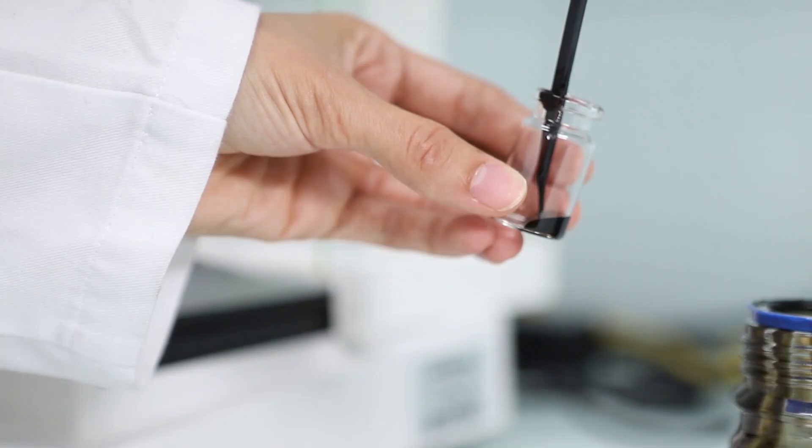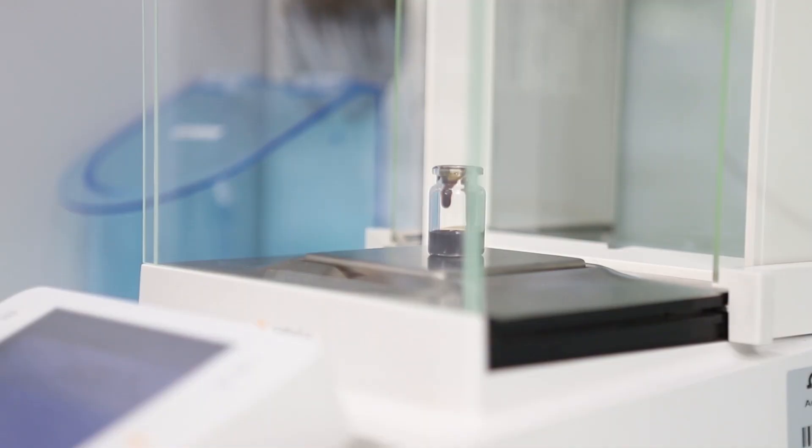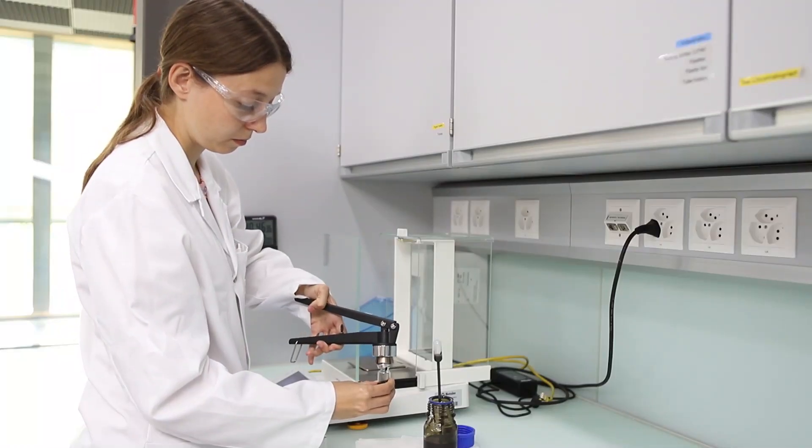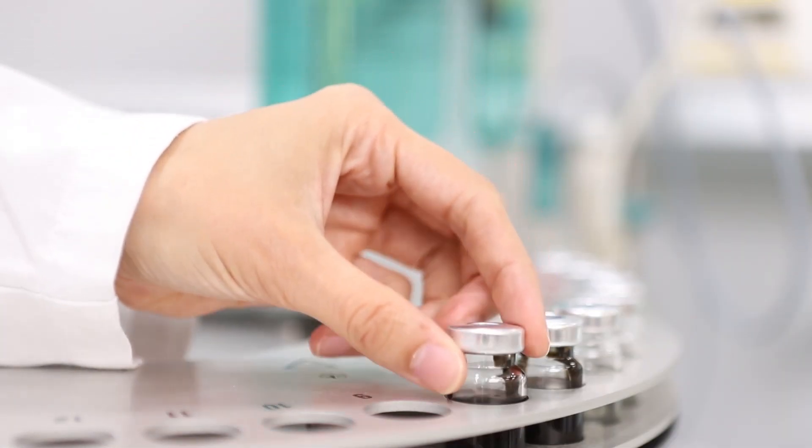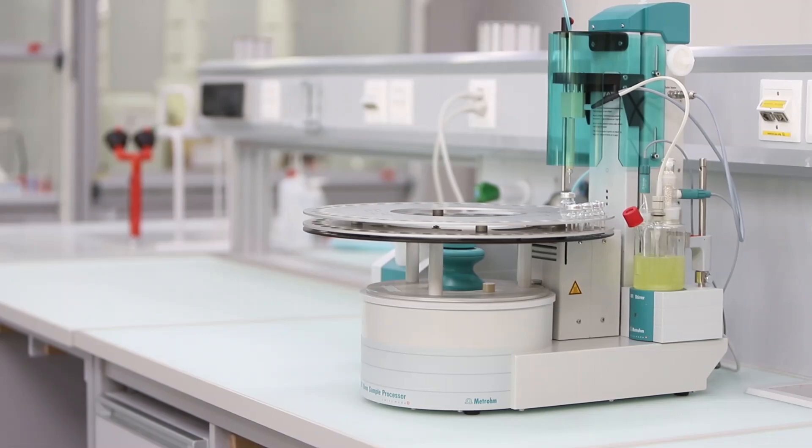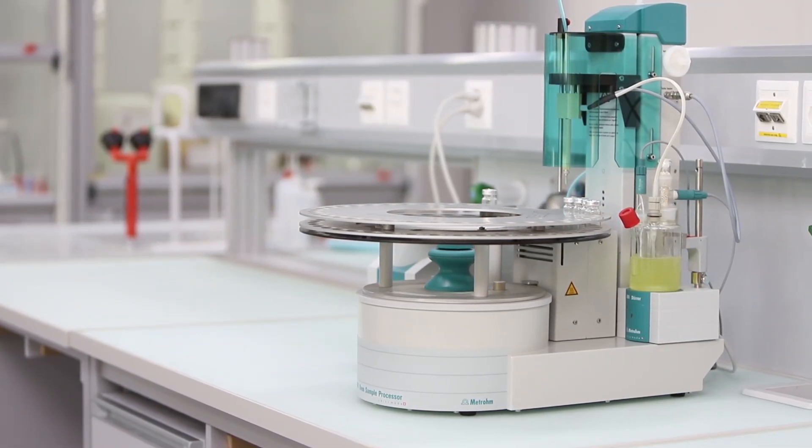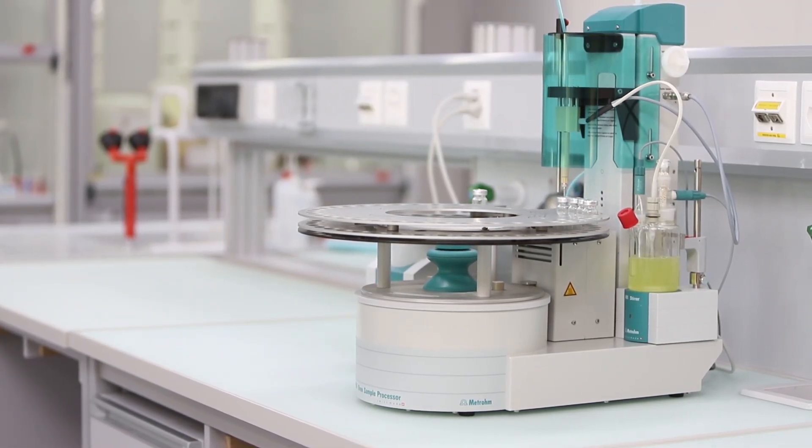The sample is weighed into a single-use vial. The vial is then hermetically sealed. Then it is placed in the Carl Fischer oven, in our case an oven sample processor. This allows us to analyze up to 35 samples fully automatically.